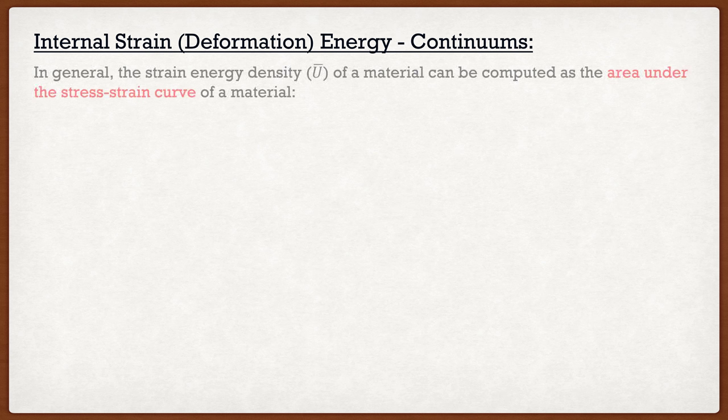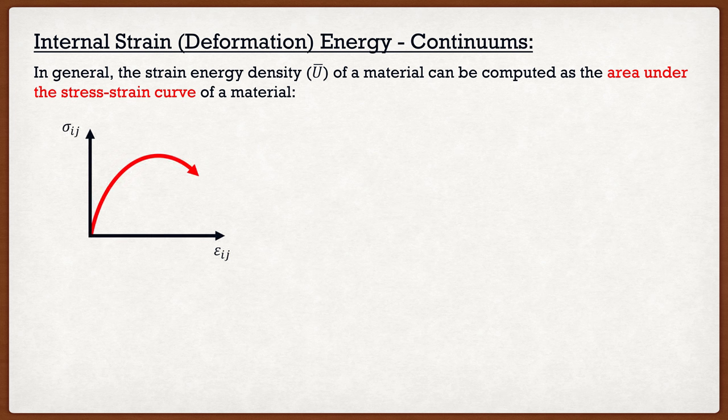So let's go on to the second question: what are the terms in that potential energy formula? We're going to start off with the most general case, which is continuous. In general, the strain energy density, which I'm going to call u-bar of a material, can be computed as the area under the stress-strain curve of a material. Let's say I take a material — steel, for instance — take it to the lab, pull it under uniaxial tension, and get a stress-strain curve.